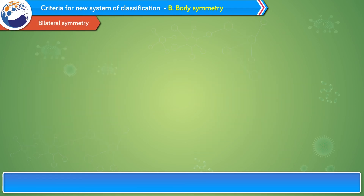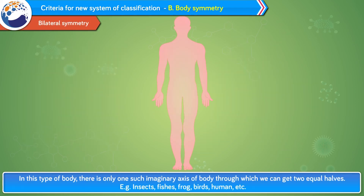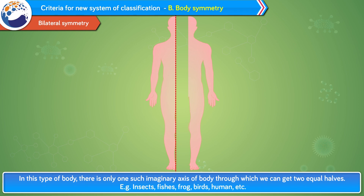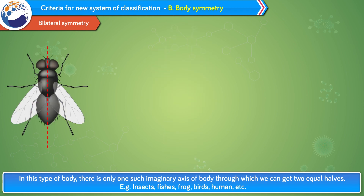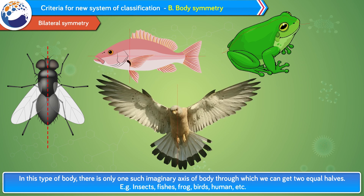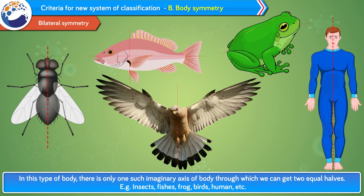Bilateral symmetry: in this type of body, there is only one such imaginary axis of the body through which we can get two equal halves. Examples: insects, fishes, frog, birds, human, etc.